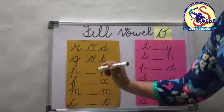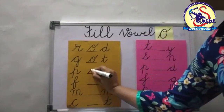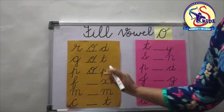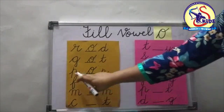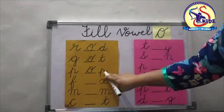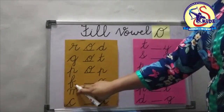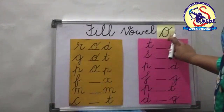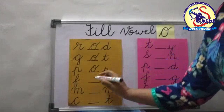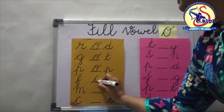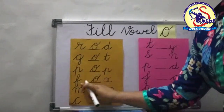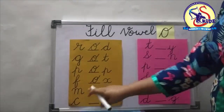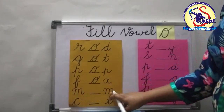Now see the next: P blank P. Again we will put O in the blank and we will get the word P-O-P, pop. Now see the next: F blank X. Again we will put O in the blank and we will get the word F-O-X, fox.